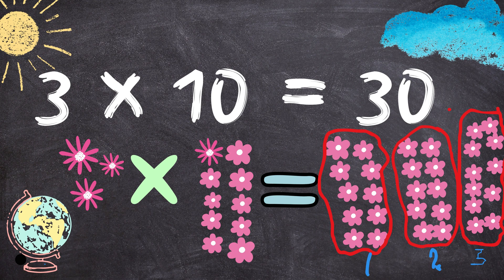Three times ten equals to thirty. Three flowers multiplied by ten flowers equals to thirty flowers.